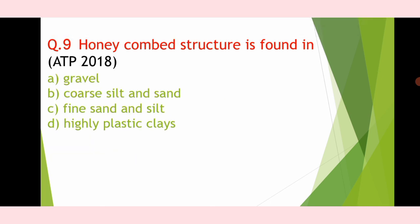Last question: Honeycomb structure is found in — Option A: gravel, Option B: coarse silt and sand, Option C: fine sand and silt, Option D: highly plastic clay. The correct answer is Option C — fine sand and silt.